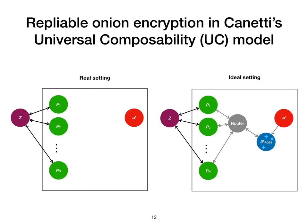We chose to work specifically in the simplified UC model, first because this choice simplifies the way we model communication. In the SUC model, the environment may communicate with the honest parties by writing into their input tapes and reading their output tapes, and the honest parties can communicate with the ideal functionality via a central router. Second, realizability of F-Rows in the SUC model implies realizability in the full UC model, so we don't lose any generality by working in the simplified model.